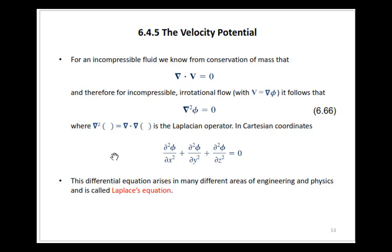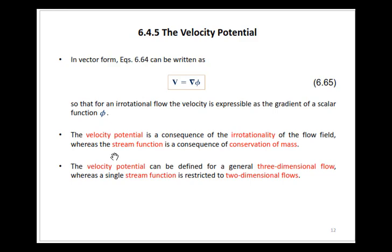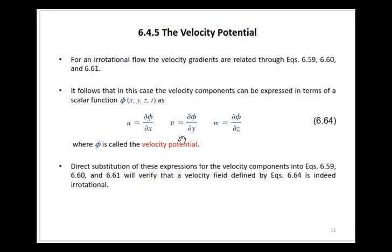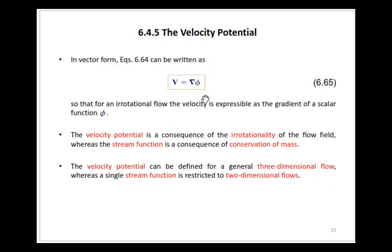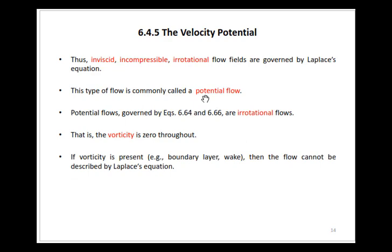The Laplacian equation has two physical considerations. The first is irrotationality, meaning the flow is not rotational, with omega_x, omega_y, omega_z all equal to zero. The second is the conservation of mass equation. When you combine these two conditions, you get the Laplacian equation. We call this type of flow — inviscid, irrotational, and incompressible — potential flow.